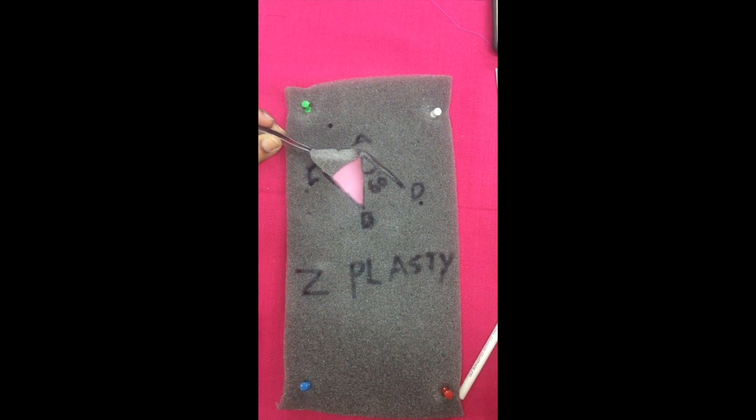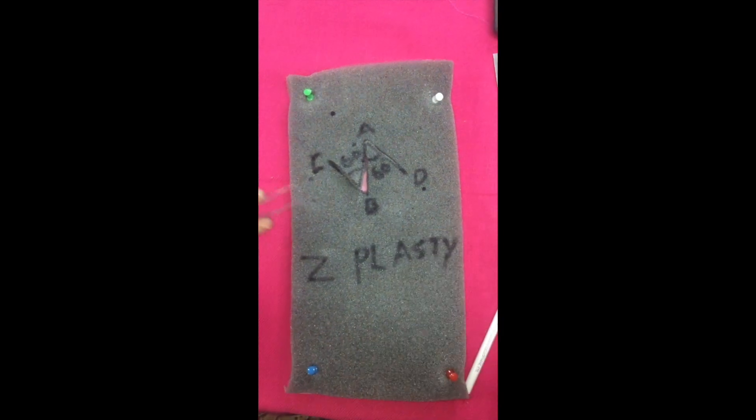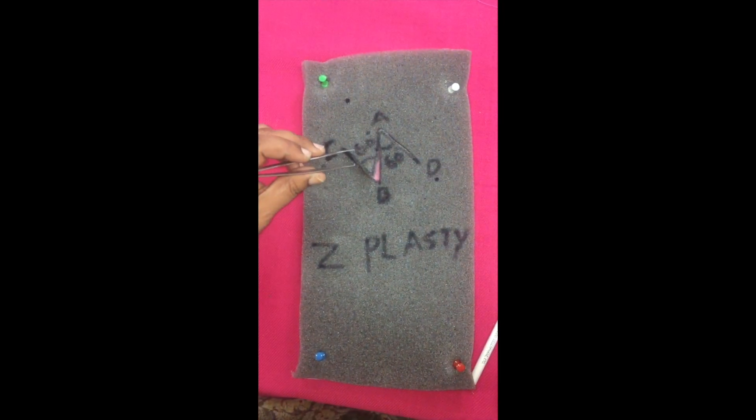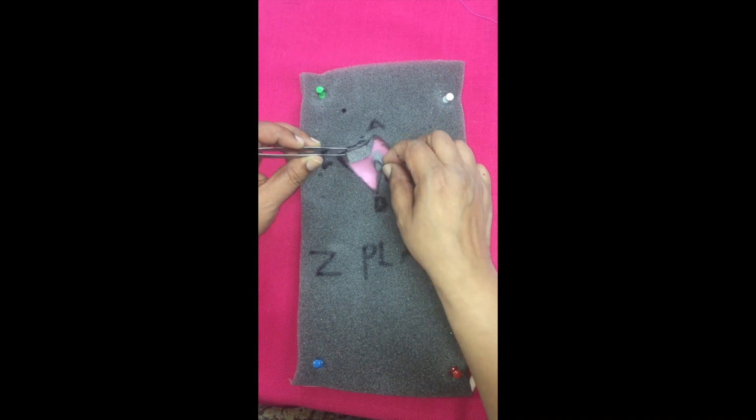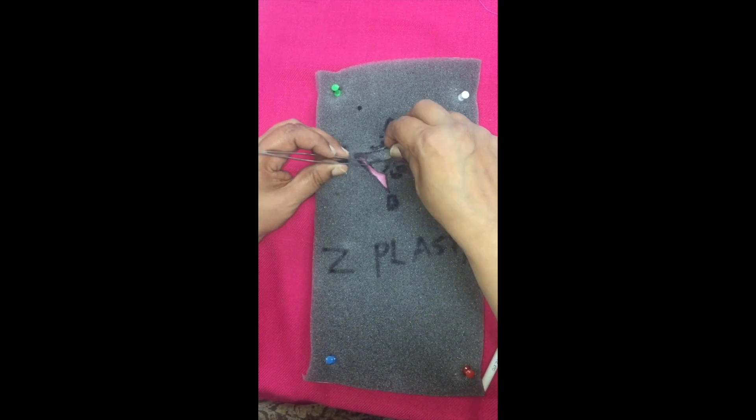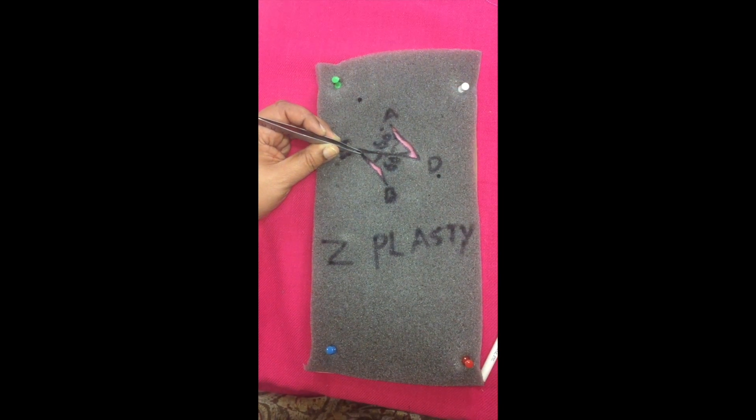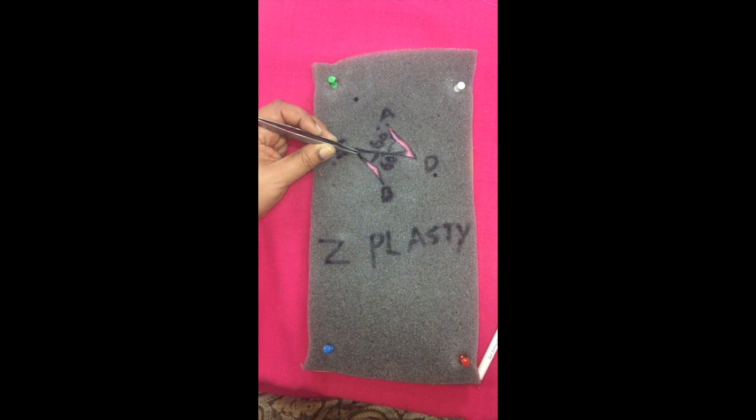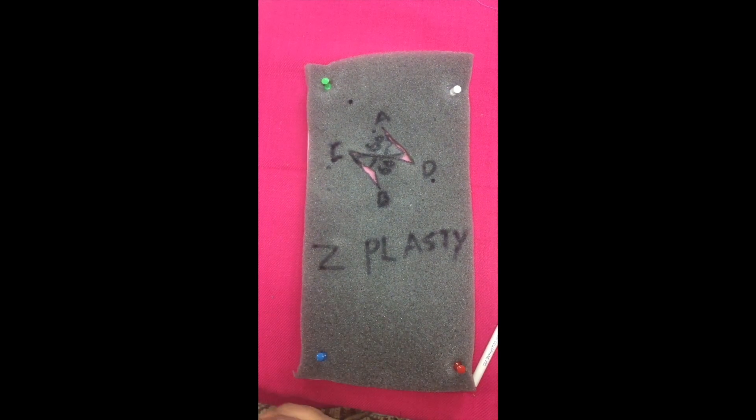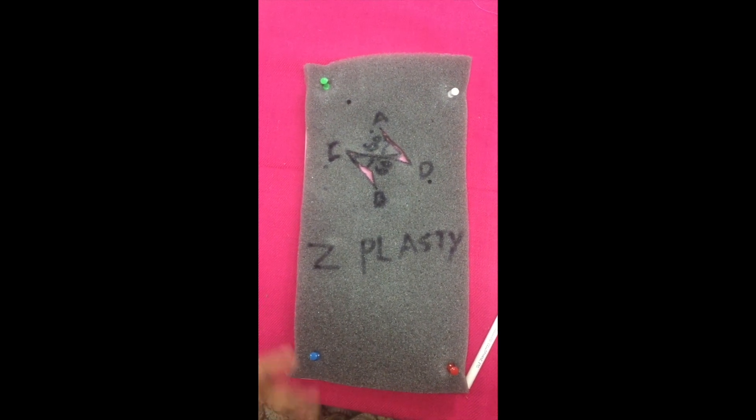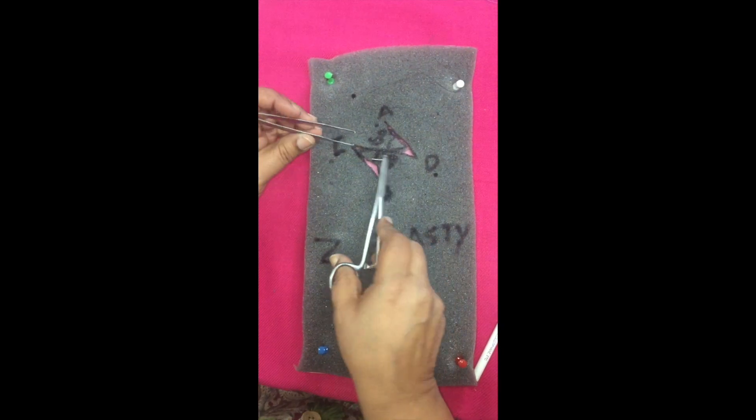The two flaps are raised now. Once the two flaps are raised, you can see they are able to transpose. This transposition is going to cause a few changes in the tissues, the scar that is the contracture length of AB and the surrounding tissues.